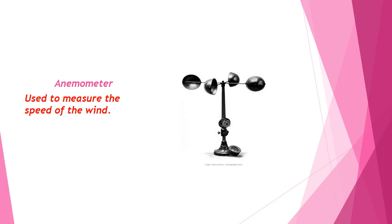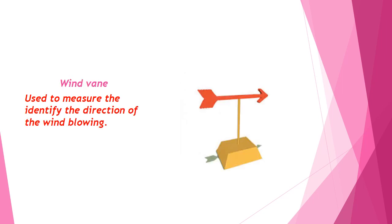Anemometers count the number of rotations or turns, which is used to calculate wind speed. Wind vane. Wind vane is an instrument that tells you the wind direction.